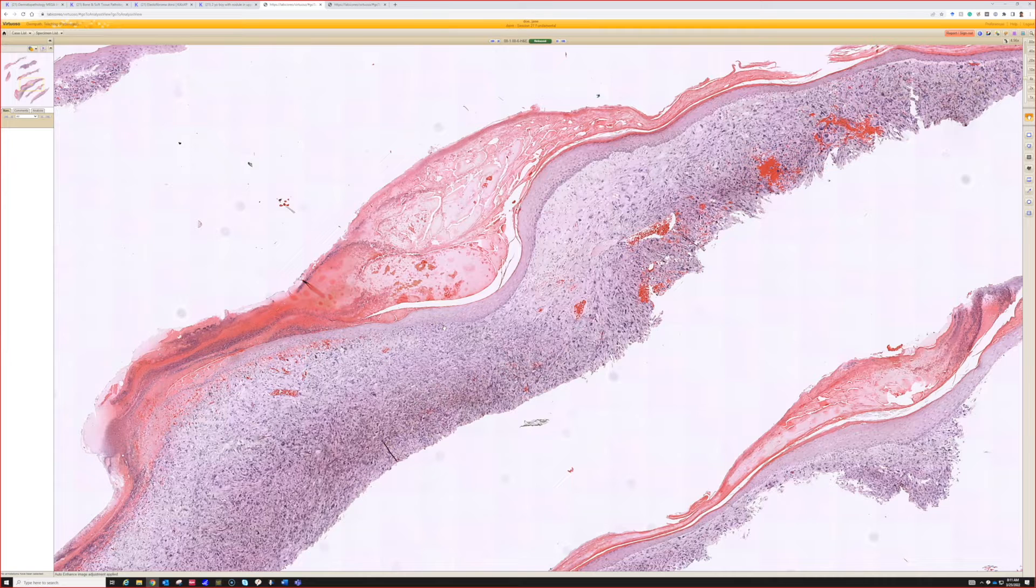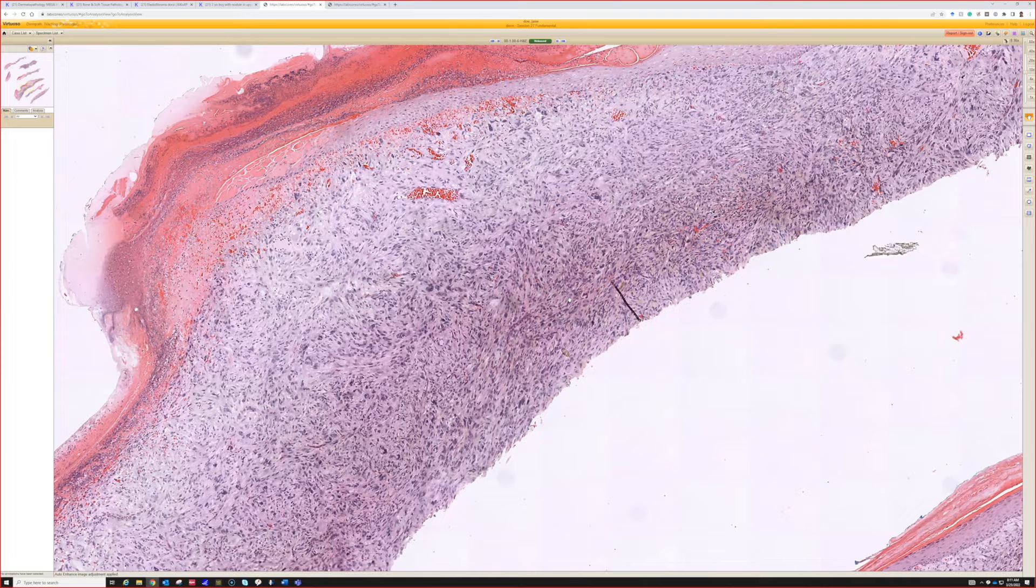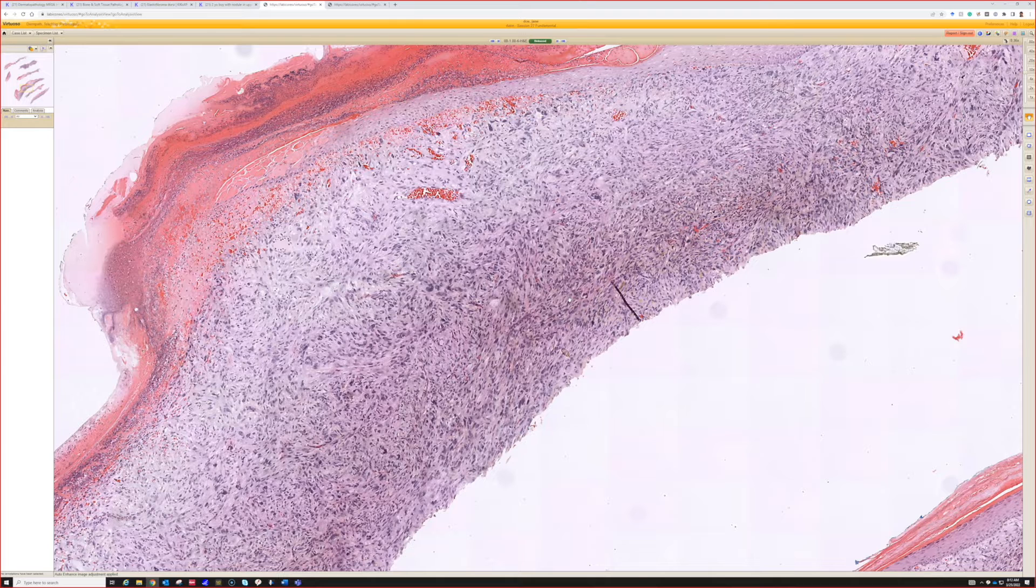If this were CD10 negative and all the other markers are negative, I'd still call it AFX versus PDS personally. Go ahead, Raheel. So you mentioned rhabdomyosarcoma in the differential. Yes. From where would rhabdomyosarcoma originate in the skin? Leiomyosarcoma arises from the blood vessels, so from where would rhabdomyosarcoma originate? Wouldn't it look more like the rhabdoid feature?